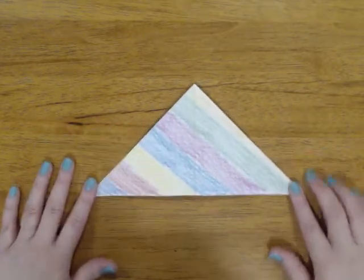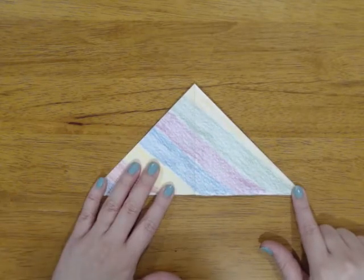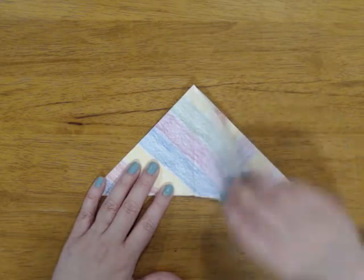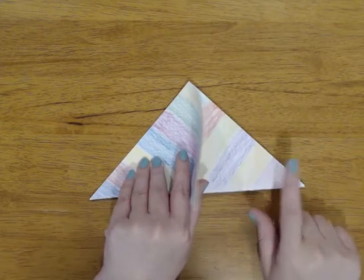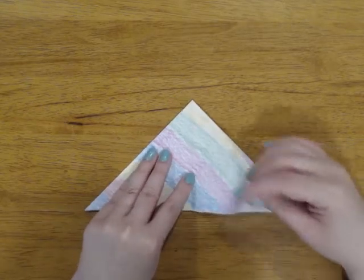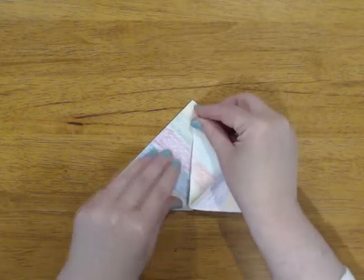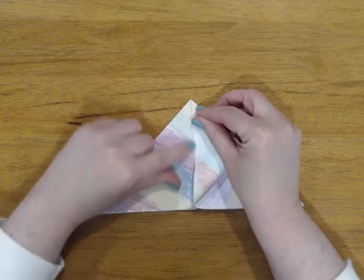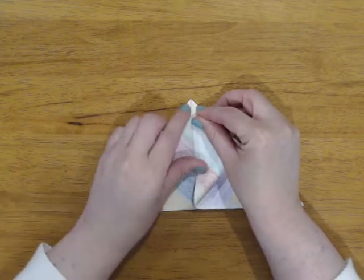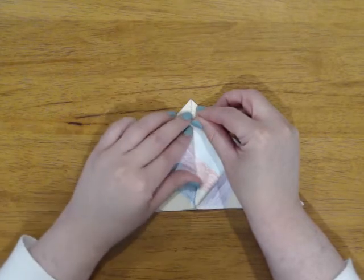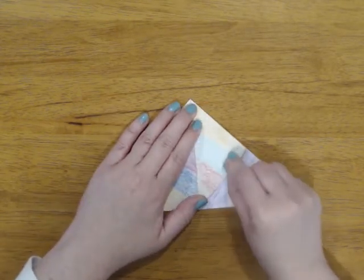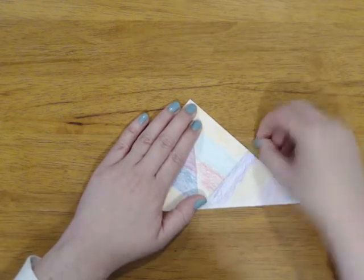Next step, we're gonna take this point and we're gonna fold it up to meet the top. So only take this top edge. Leave that back page down there. We're gonna come back for him later. So we're gonna fold up. Line up this edge. You're gonna be able to see a crease here from all of our other folding. You're gonna line up that point with the top. Take your time. Make sure the line is good. And then crease.